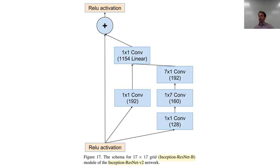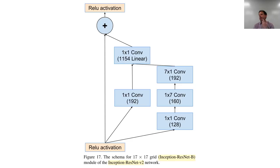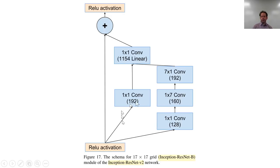A DenseNet is just a ResNet where we do concat instead of plus. That's an interesting approach because the identity path is literally being copied, so you kind of get that flow through all the way, and as we'll see next week, that tends to be good for segmentation and stuff, where you really want to keep the original pixels and the first layer of pixels untouched. Concatenating rather than adding branches is a very useful thing to do.